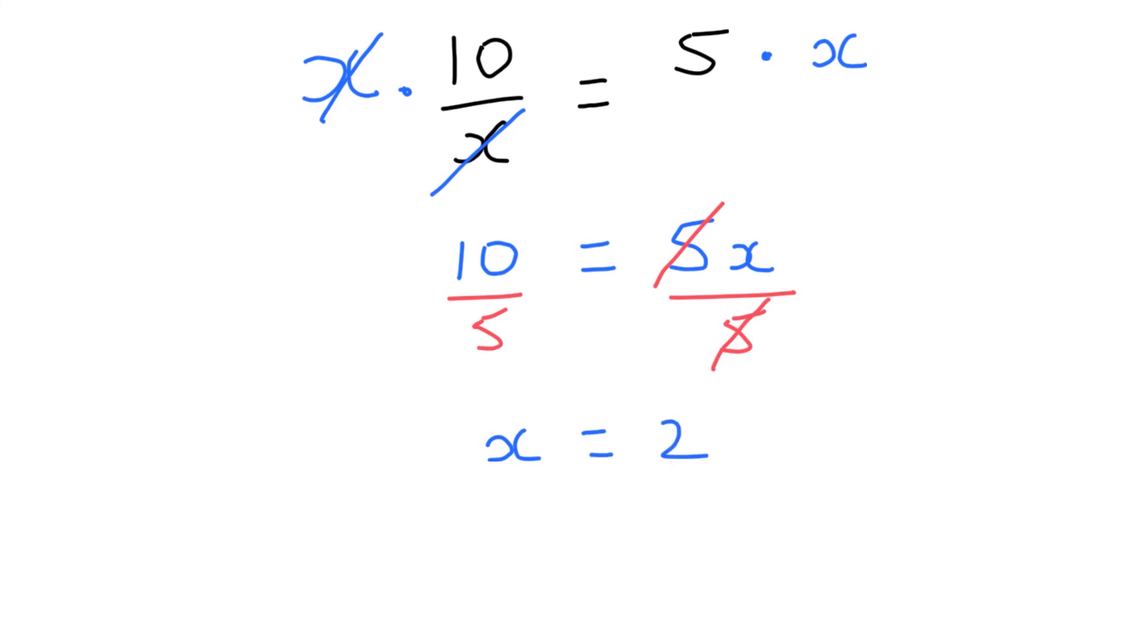Now what I want to point out is, notice when in my first step when I multiplied both sides by x, I'm writing the x up high as if it's in a numerator, as if it was x over 1. There's a lot of students who make the mistake of when they multiply by x, they want to multiply it down here beside the x.